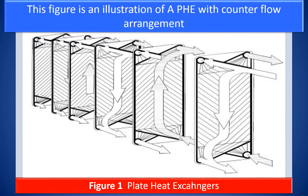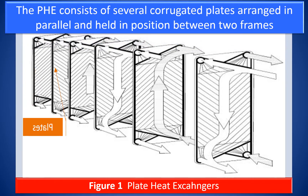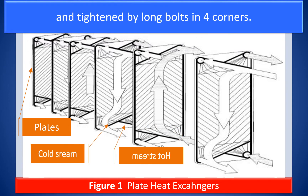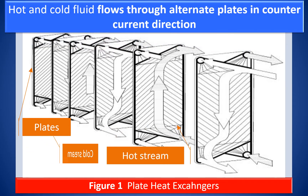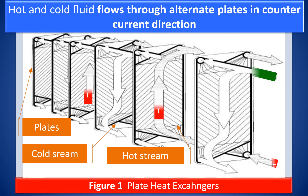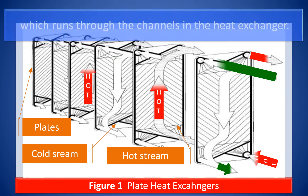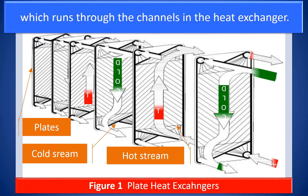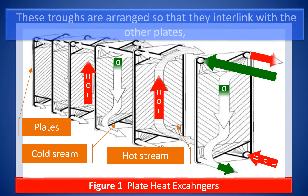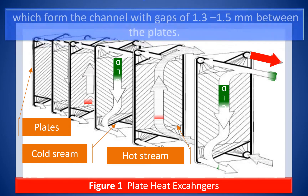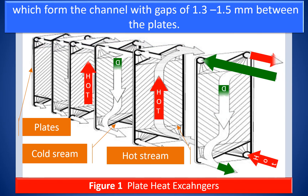This figure illustrates a plate heat exchanger with counter-current flow arrangement. The plate heat exchanger consists of several corrugated plates arranged in parallel and held in position between two frames, tightened by long bolts in four corners. Hot and cold fluid flows through alternate plates in counter-current direction. The plates are pressed to form troughs at right angles to the direction of flow, which runs through the channels, with gaps of 1.3 to 1.5 mm between the plates.